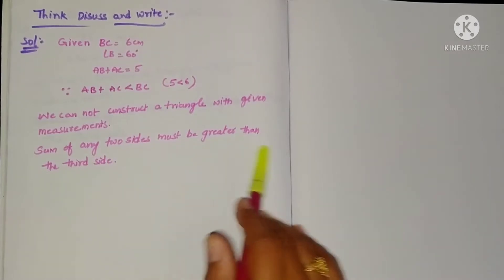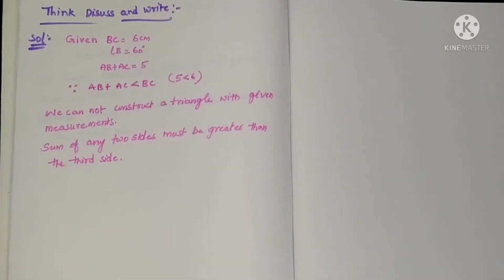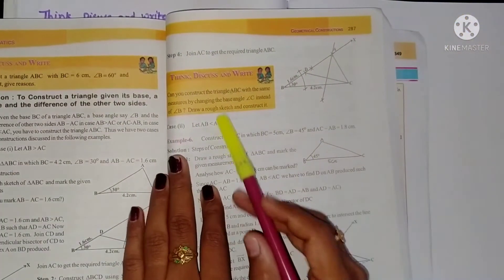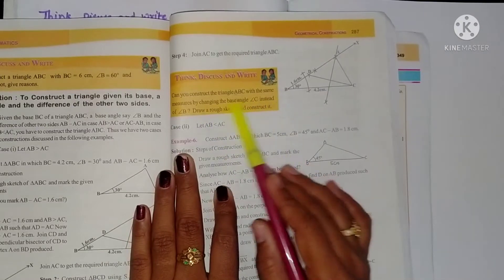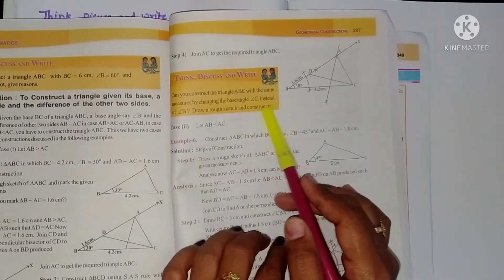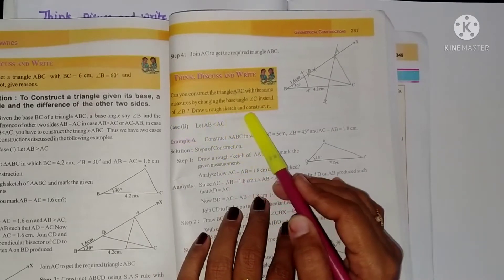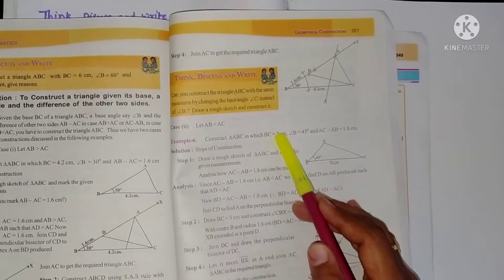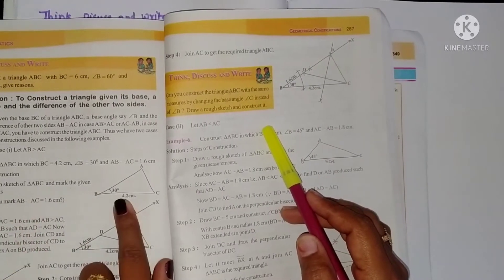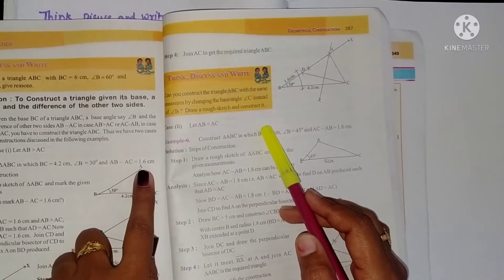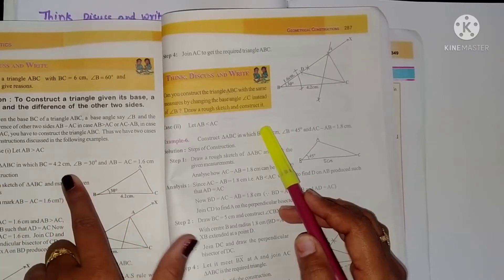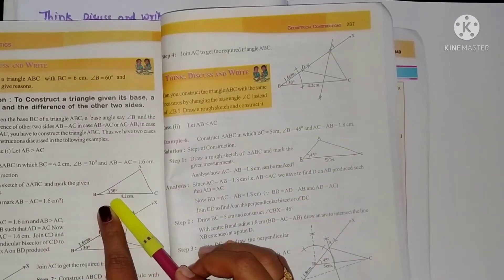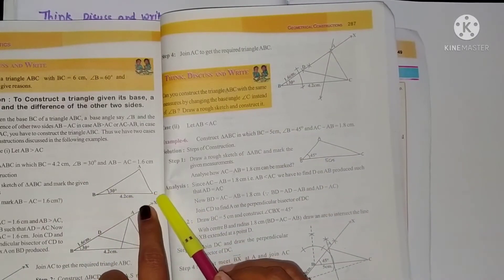The sum of any two sides must be greater than the third side. Next, page number 287 Think, Discuss and Write: Can you construct triangle ABC with the same measures by changing the base angle to angle C instead of angle B? Draw a rough sketch and construct it. In Example 5, angle B is 30 degrees and the difference between two sides is 1.6, with one side being 4.2. In this problem, instead of angle B we take angle C.